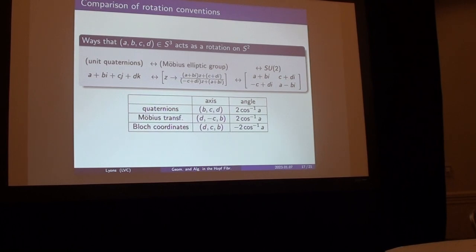So Mobius transformation is very similar, only the B and D have to switch and the C gets a minus sign. All right, but it's the same angle, but there's kind of a shuffling and some signs put into the axis.